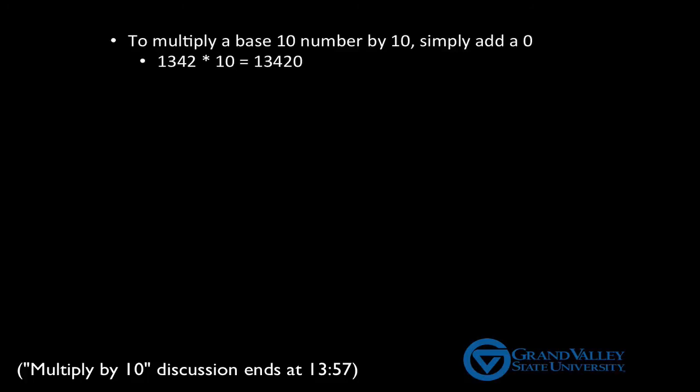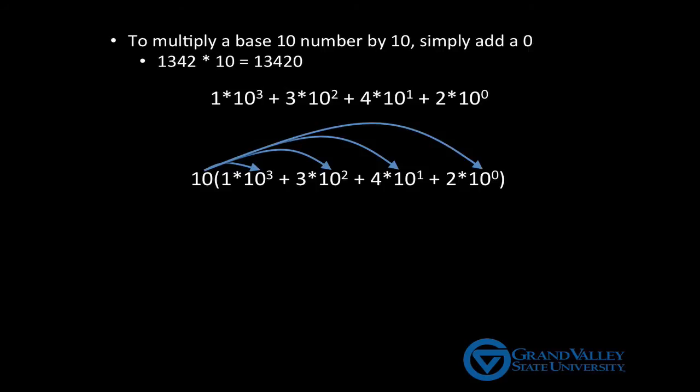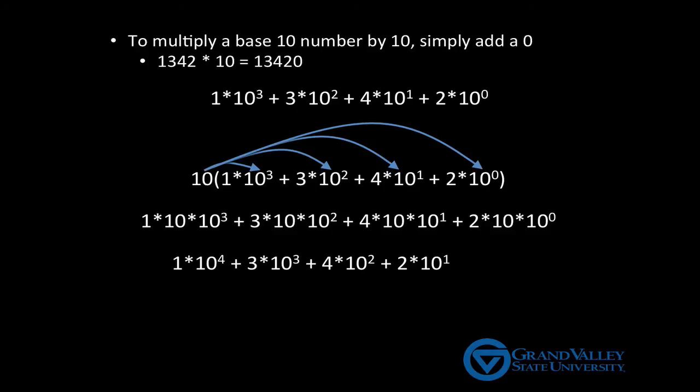Also, to multiply a base 10 number by 10, you simply add a 0. For example, 1342 times 10 is 13,420. Now, I know you all know this and have been doing it for years, but I do want to take a minute to make sure you remember why this trick works. Let's start by writing 1342 as its base 10 expansion. Now, we're going to multiply this number by 10, and to do that we'll distribute the 10 across all of the components, which gives us an expression like 1 times 10 times 10 cubed plus 3 times 10 times 10 squared and so on. Now, multiplying all these powers of 10 by 10 simply adds 1 to all of the exponents. And at this point, we can also just add a 0 to the end, which I'm going to write as 0 times 10 to the 0, since there is no 10 to the 0 term here. And what you see is nothing more than a base 10 expansion of 13,420.